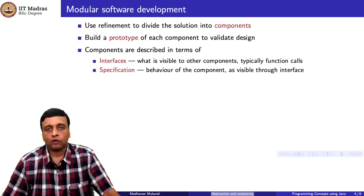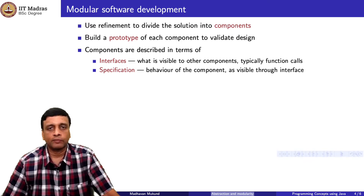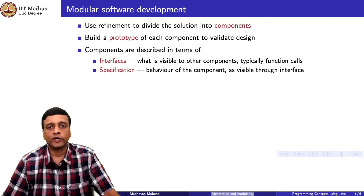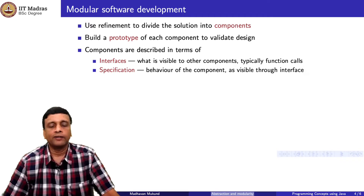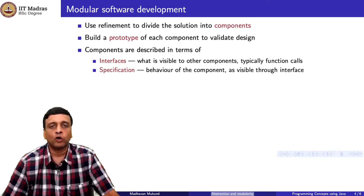To build this prototype and ensure that components interact properly and can be developed separately, we need to specify each component in terms of two parts. One is the interface — it tells us how this component interacts with others: what functions can be called on it from outside, what data is visible, and what functions can be invoked. The specification, on the other hand, is a behavioral description: it tells us what the component is supposed to do. For example, if my component is to withdraw money from an account, I specify that given an amount and an account number, it must decrement that amount from that account. The interface is a static structural requirement; the specification is a behavioral requirement.